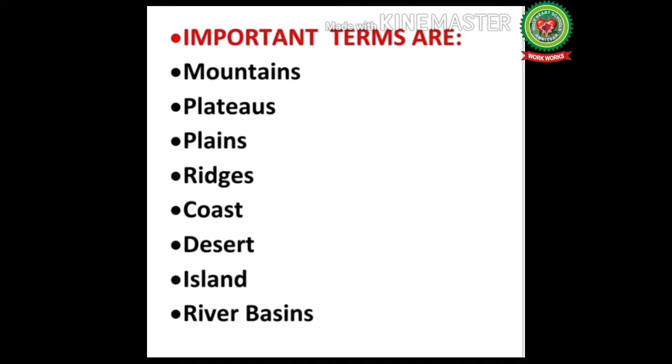Plateau: high, flat tableland with rugged topography, example Tibetan Plateau. Plains: flat, fertile land formed by sediments brought down by rivers, example Indo-Gangetic Plains and Siberian Plains. Ridges: a long, narrow hilltop or mountain range, example the Himalayas.